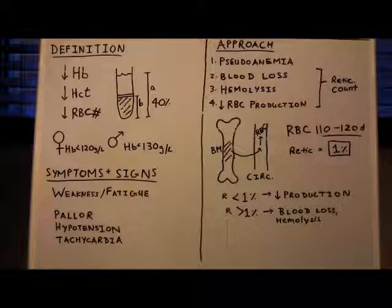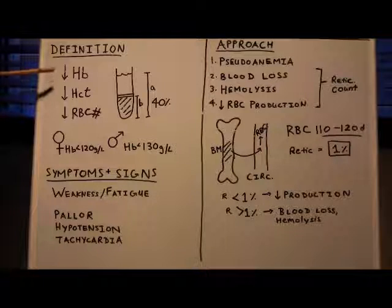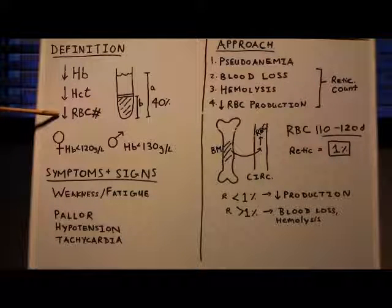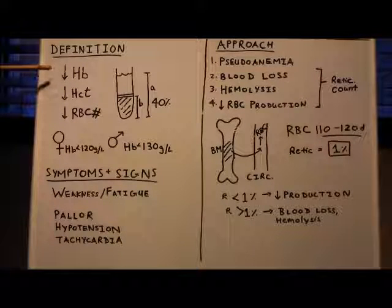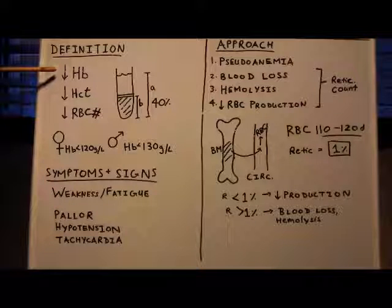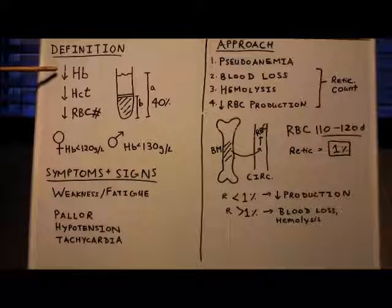So what is anemia? Anemia is a drop in hemoglobin, hematocrit, or red blood cell number. Hemoglobin is a protein found in red blood cells, and it binds oxygen and delivers it to the cells and organs of your body.